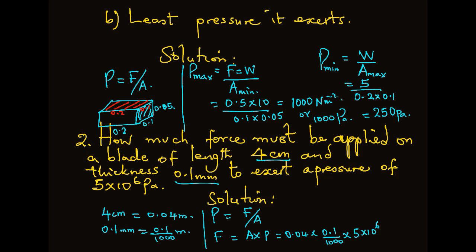This, when worked out, gives a force of 0.1 multiplied by 0.04 multiplied by 5 then multiplied by 1000. This gives a force of 20 newtons. So in order to exert a pressure of 5 million pascals, we need a force of 20 newtons.